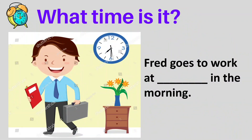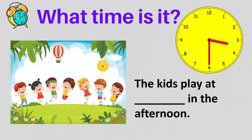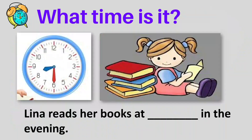Now what time is it? Fred goes to work at seven thirty in the morning. How about this one? The kids play at three thirty in the afternoon. The hour hand is between three and four, so you choose the smaller number, which is three. What time is it? Lena reads her books at eight thirty in the evening. Very good!